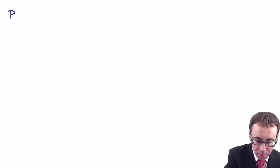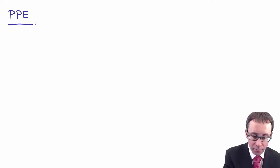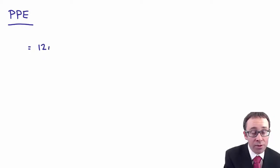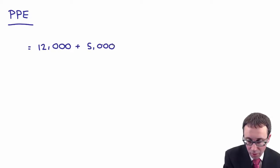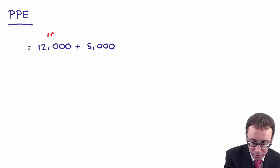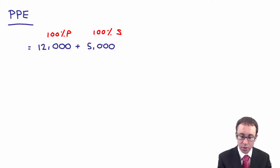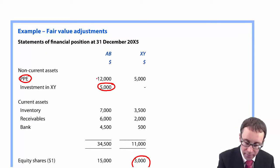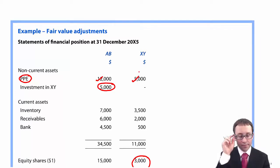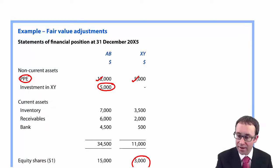For the easy marks, let's start with property, plant and equipment. We need to add across 100% of P and 100% of S. 100% of the parent was $12,000, and 100% of the subsidiary was $5,000. The issue now is the fair value adjustment: we need to get the asset from $1,500 up to $3,500 — a fair value adjustment of $2,000 at the date of acquisition.